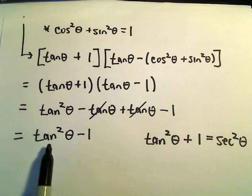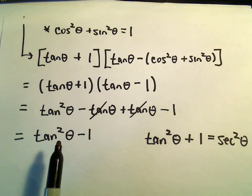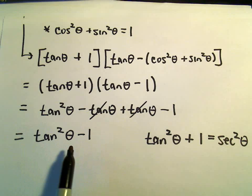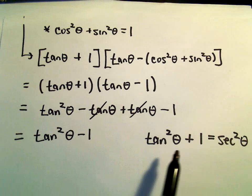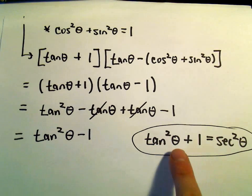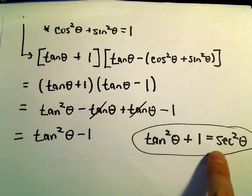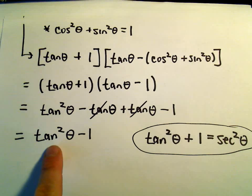And I think, well, is there really much of anything to do? Can I somehow manipulate this tangent squared theta? Is there any way to, what's a better way to say it? Is there any way I can manipulate this identity tangent squared theta plus 1 equals secant squared theta? Is there any way I can sort of manipulate that to make it say tangent squared theta minus 1?